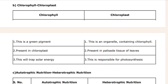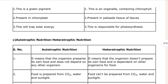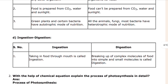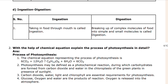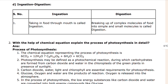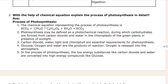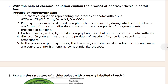Autotrophic nutrition and heterotrophic nutrition - autotrophic means which is prepared by the organism itself. Heterotrophic means depending on others; they don't prepare their own food. Animals and human beings are totally dependent on plants and other animals only.